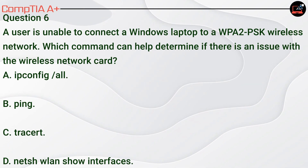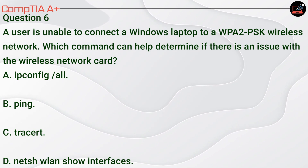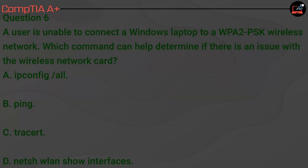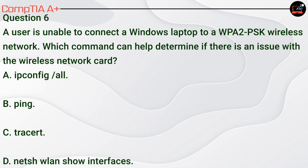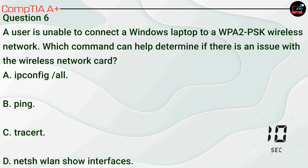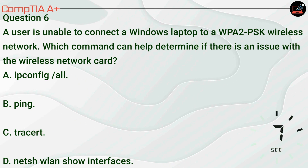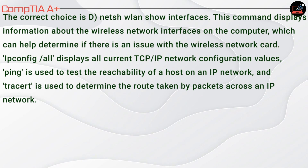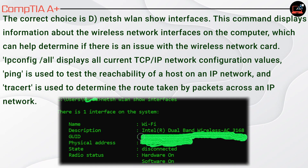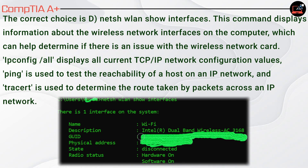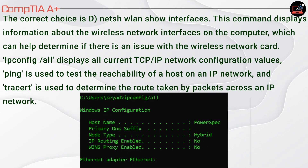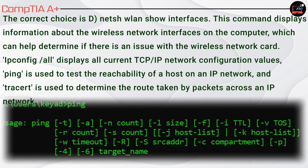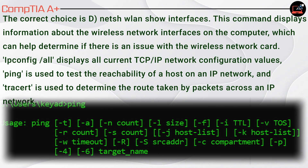Question 6. A user is unable to connect a Windows laptop to a WPA2-PSK wireless network. Which command can help determine if there is an issue with the wireless network card? A, ipconfig /all. B, ping. C, tracert. D, netsh wlan show interfaces. The correct choice is D, netsh wlan show interfaces. This command displays information about the wireless network interfaces on the computer, which can help determine if there is an issue with the wireless network card. ipconfig /all displays all current TCP/IP network configuration values. Ping is used to test the reachability of a host on an IP network. And tracert is used to determine the route taken by packets across an IP network.